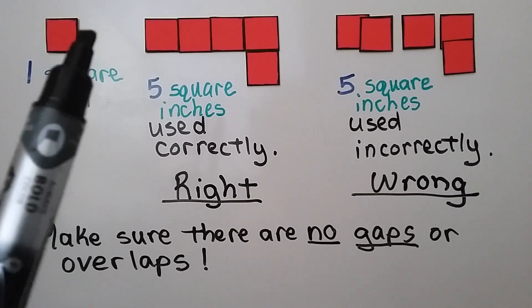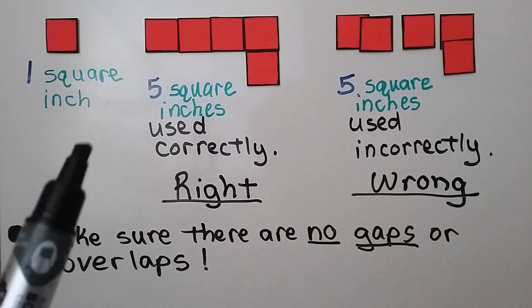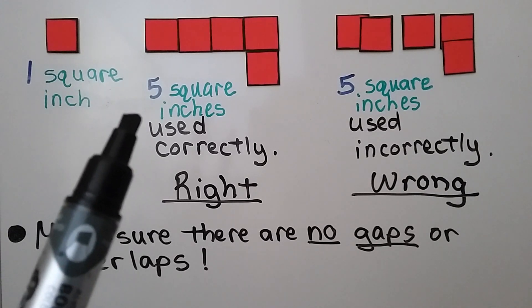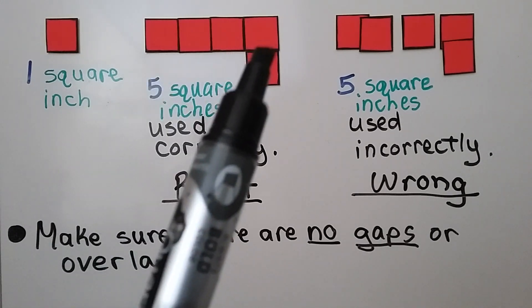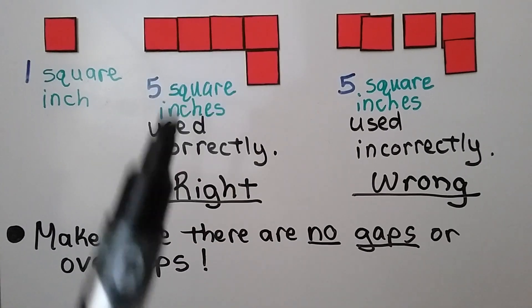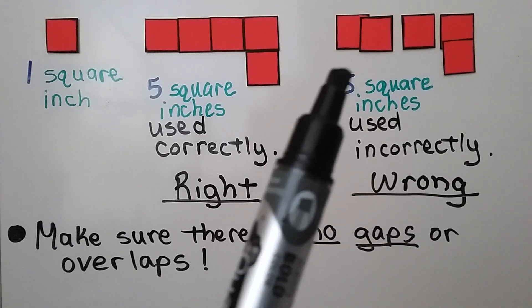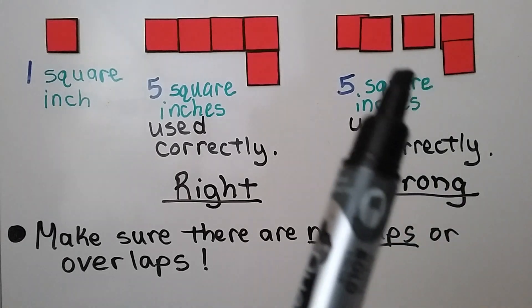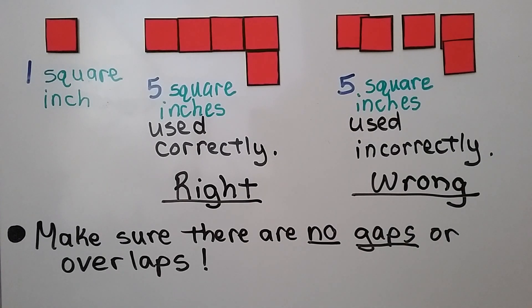All the sides are one inch, so that means it's one square inch. Five tiles like this would be five square inches. The correct way is to have them all nice and neat with the sides touching. The wrong way is to have them overlapping or with gaps. We need to make sure there are no gaps or overlaps when we use the unit squares.